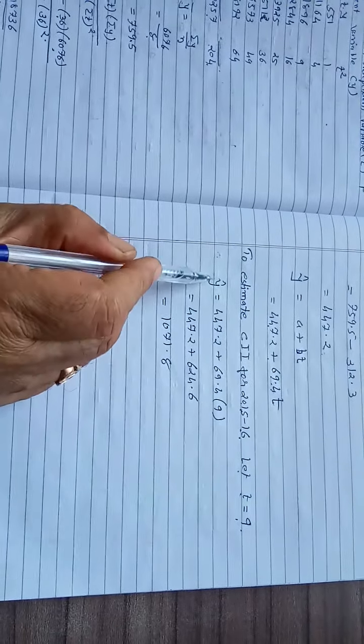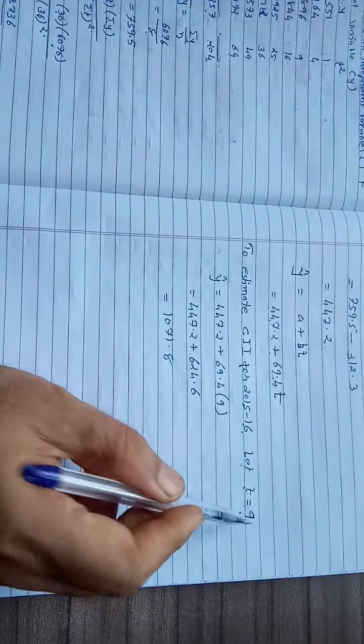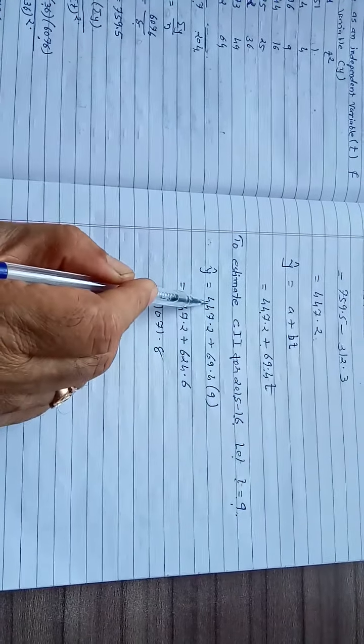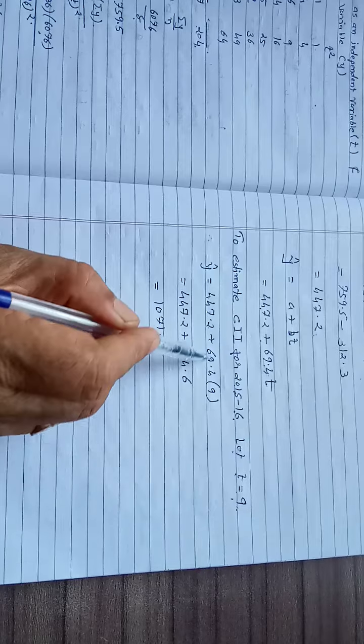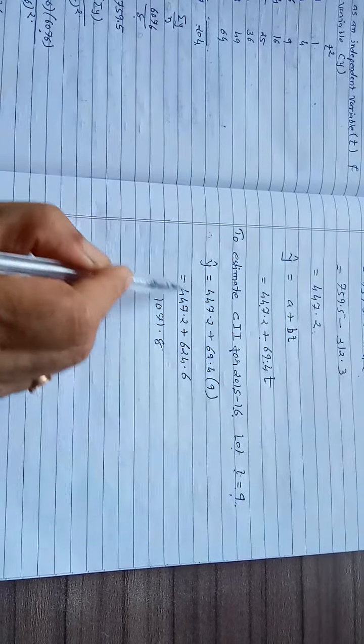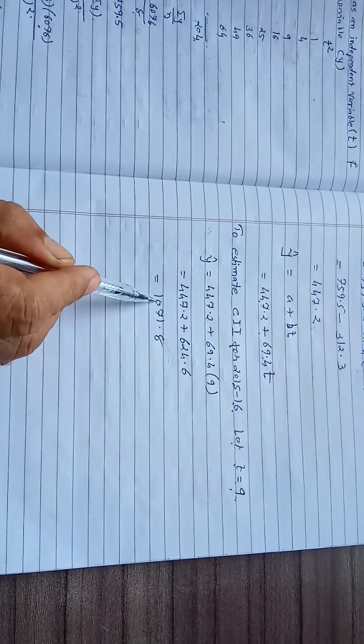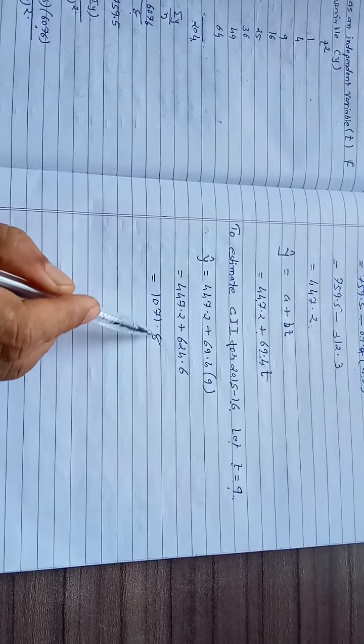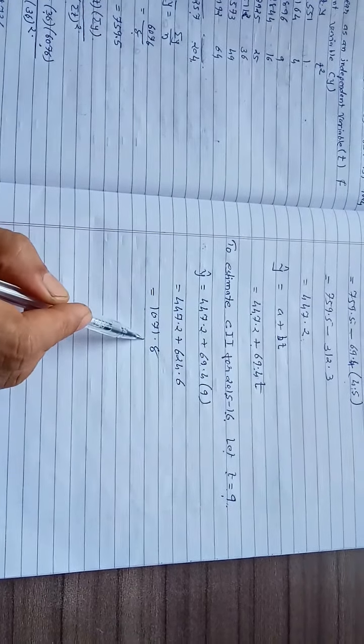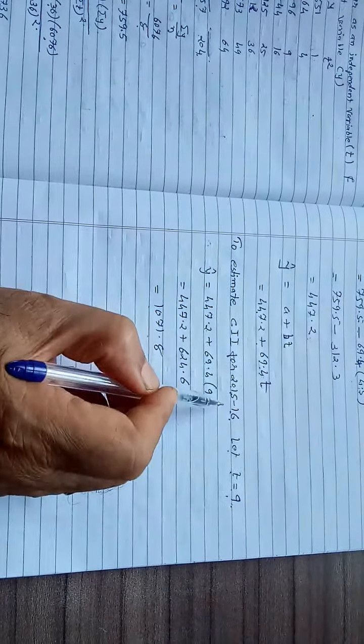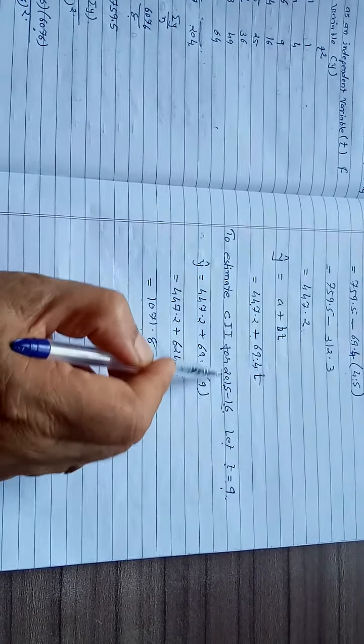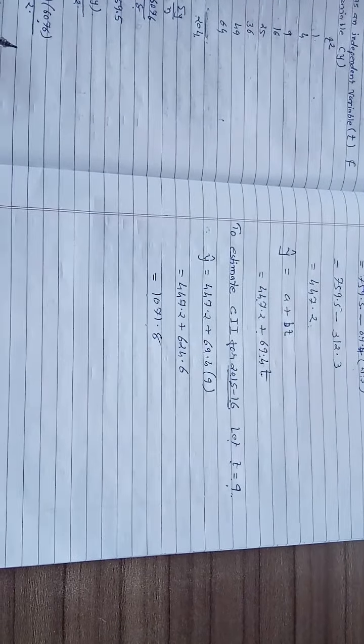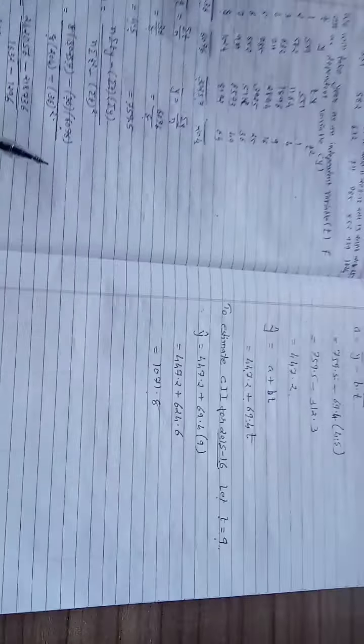Substituting the value t equals 9 in the above equation: 447.2 plus 69.4 into 9. Simplifying this, we get the trend 1071.8. CII for the year 2015-16, that is the method.